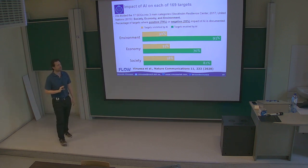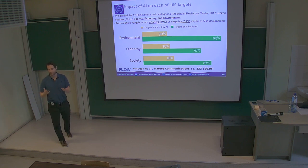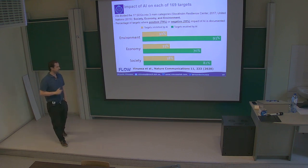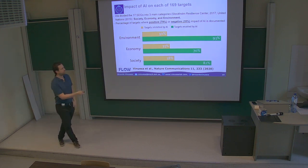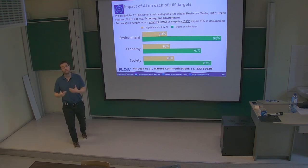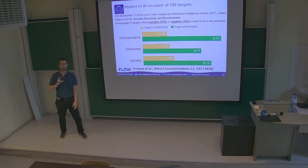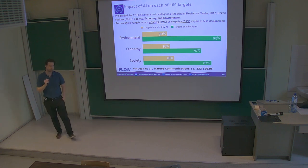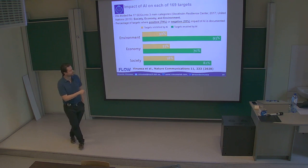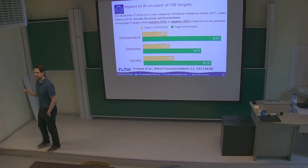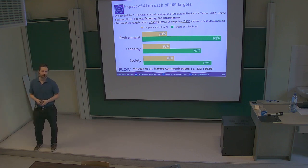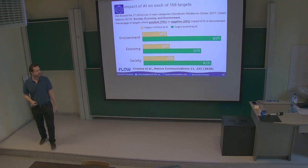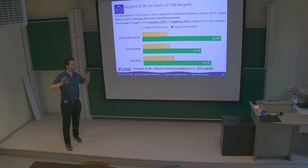I will emphasize this more later when I talk about policy and regulations. If we look at the three areas—environment, economy, and society—the environment has probably the most positive effect of AI: 93% of all the targets can be positively affected within the environment. The area with the most threats associated with AI would probably be society, where 38% of the targets can be negatively affected. We have actually experienced that with the COVID situation and some election results.